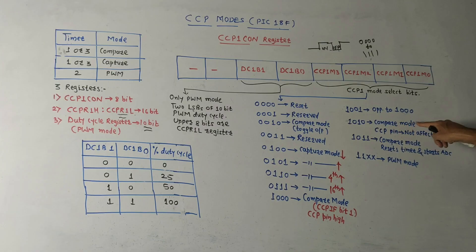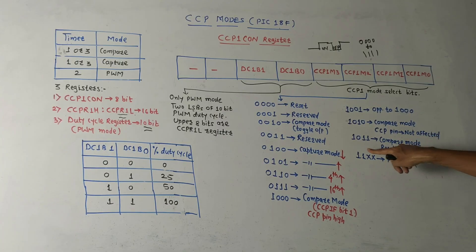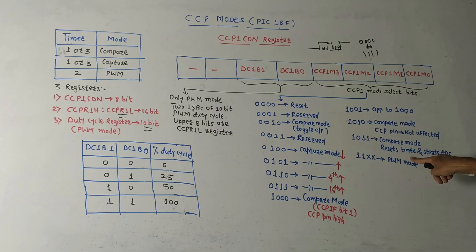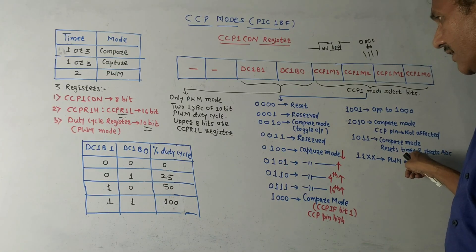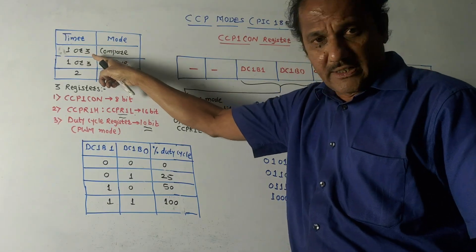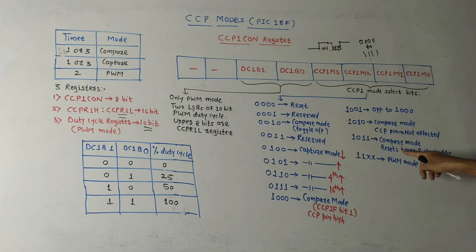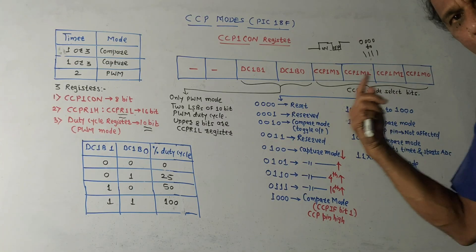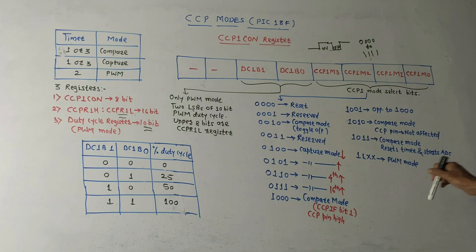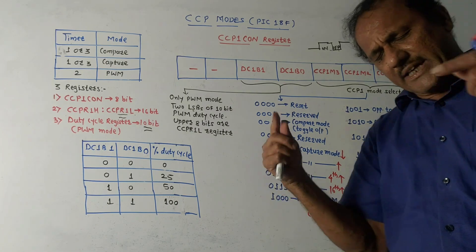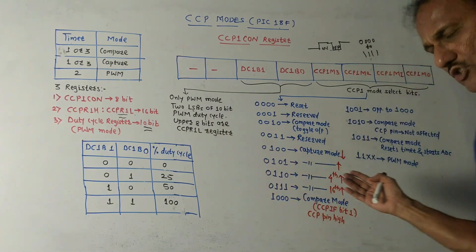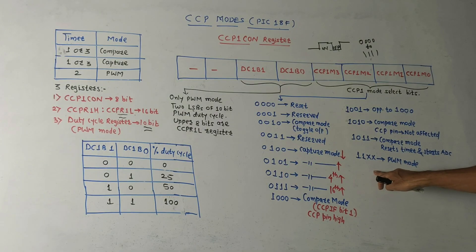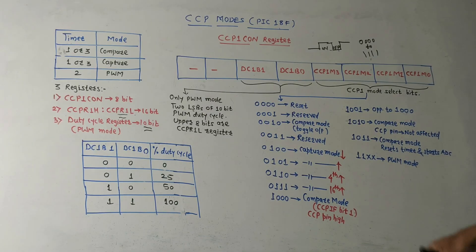1010 is used for compare mode where the CCP pin is not affected. 1011 is again compare mode where it resets the timer — Timer 1 or 3 — and starts analog-to-digital conversion (ADC). The combinations 11xx — that is 1100, 1101, 1110, and 1111 — are all used for PWM mode.